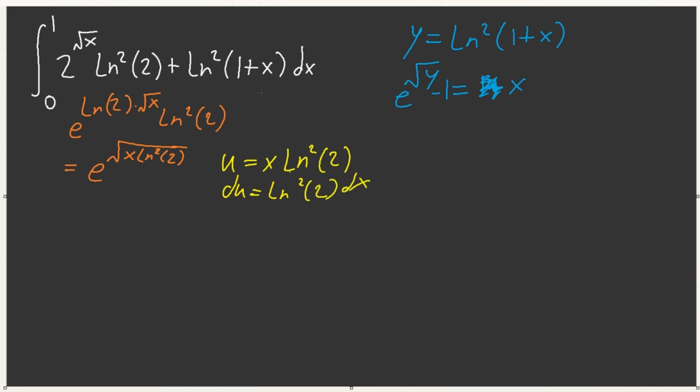So, that's what we're going to do. We're going to let u equal x ln square of 2. And what this would give us, let's see, plug in 0, we get 0. Plug in 1, you just get ln square. So now, what we have is e to the square root of u, and then that ln square is gone because of the du, plus, and then we have 0, 1, ln square of 1 plus x. E to the square root of u, du, ln square of 1 plus x. So are we done?